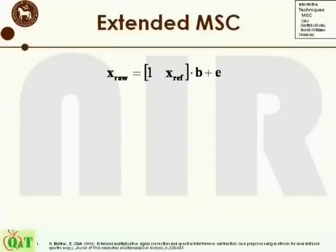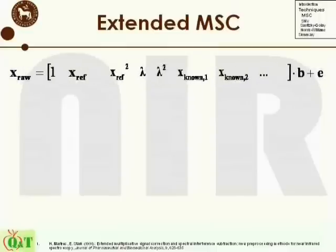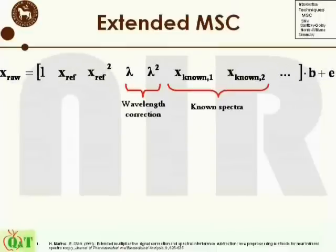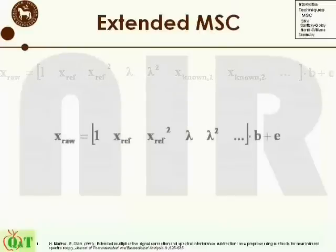Looking at the parameters for the basic MSC in matrix form, it only includes a column of 1s and a column of the reference spectra. The simplicity of the expansion is that it is possible to add columns to this matrix. Normally, wavelength correction is what is added, but also other expansions are possible, like known spectra of either wanted or unwanted character. However, in practical applications, it is often difficult or impossible to extract such pure spectra. Therefore, the most useful expansion to the basic MSC is increased polynomial reference correction and/or wavelength correction of different polynomial orders.